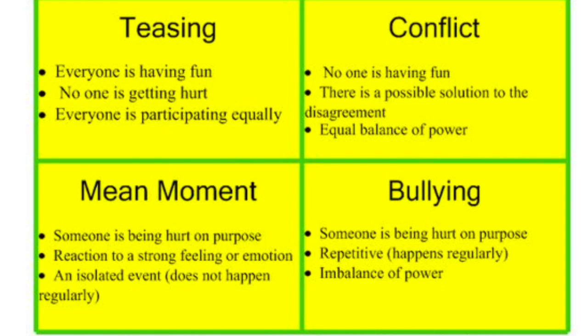Now, a mean moment is most often confused for bullying. But with a mean moment, the biggest difference is that it happens one time. Remember, bullying has to be done repetitively — it happens regularly or often. But a mean moment is something that someone does to hurt someone on purpose one time, and usually it's in response or reaction to a strong feeling. Maybe somebody hurt their feelings or maybe they were having a rough morning. We all have mean moments but that doesn't mean that we're all bullies.